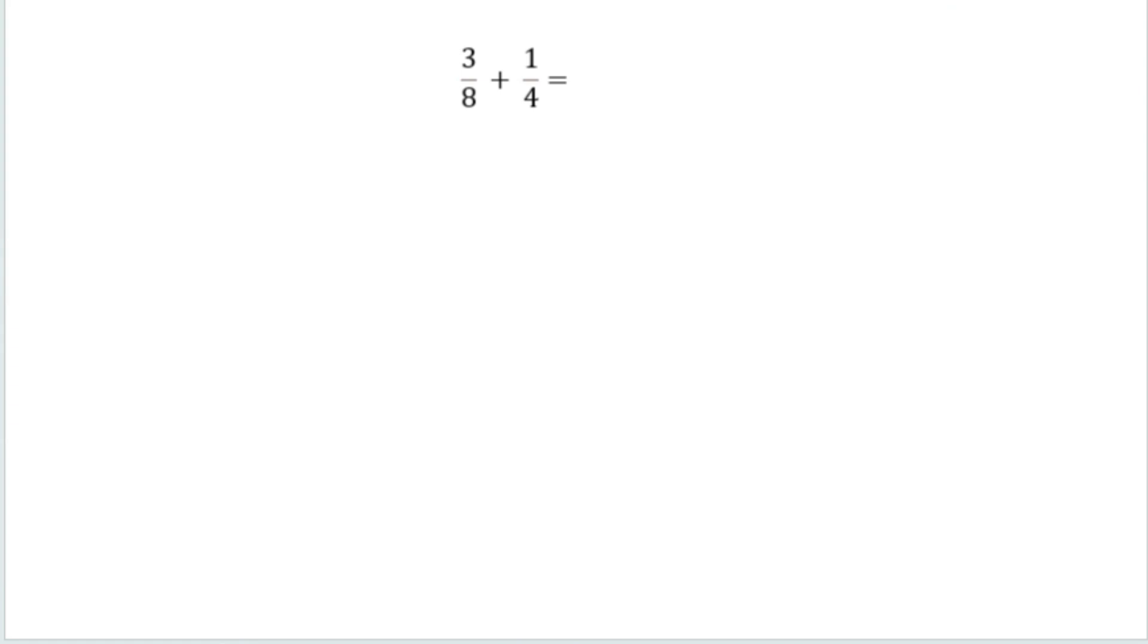So we know 4 is a factor of 8, so we are going to make our common denominator 8. 3 eighths, we're not going to change that. But I'm going to multiply my second term by 2 over 2. 1 times 2 is 2, and 4 times 2 is 8.